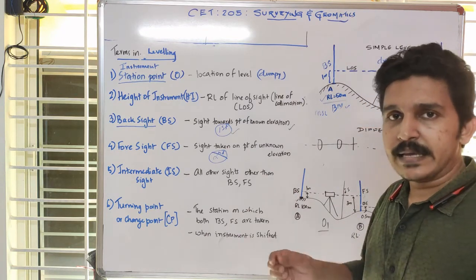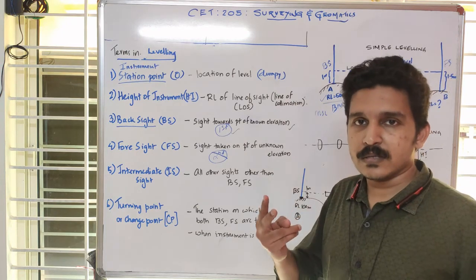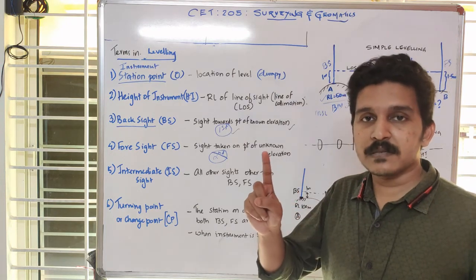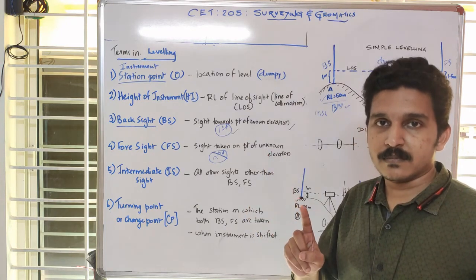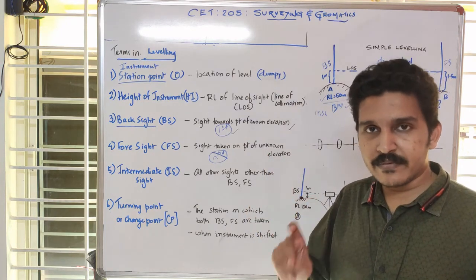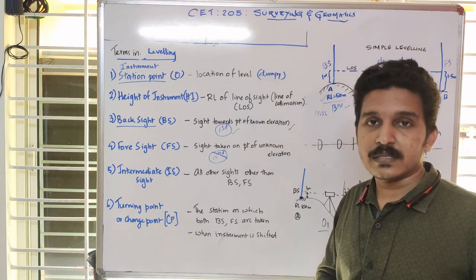If you work through a problem, there are two methods of leveling: the height of instrument method and the rise and fall method.